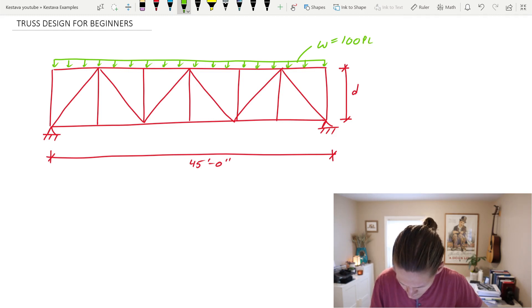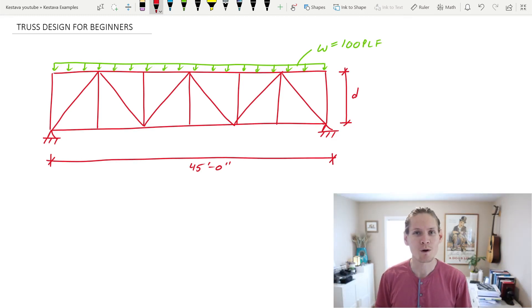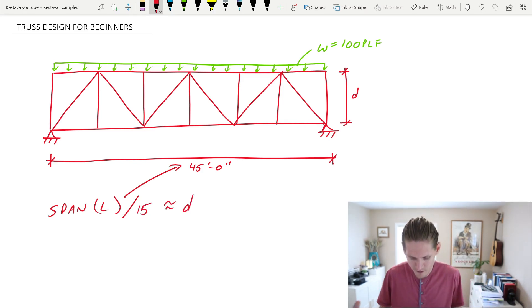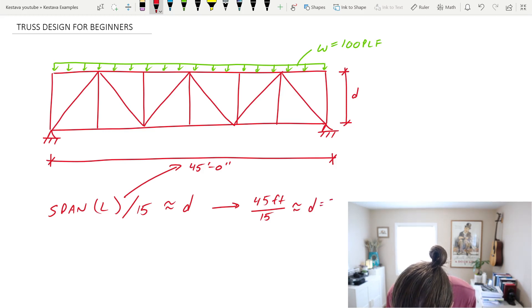For our purposes we're going to just keep this example pretty straightforward today and we're going to say cumulatively we have 100 pounds per lineal foot. If you're working out a preliminary truss size, the first helpful equation is the following: your span L, as we'll denote it, which in this case is 45 feet, divided by 15 is the approximate depth for a generally efficient truss. That would mean 45 feet divided by 15, that would get us an approximate truss depth for a 45-foot span of somewhere around 3 feet.